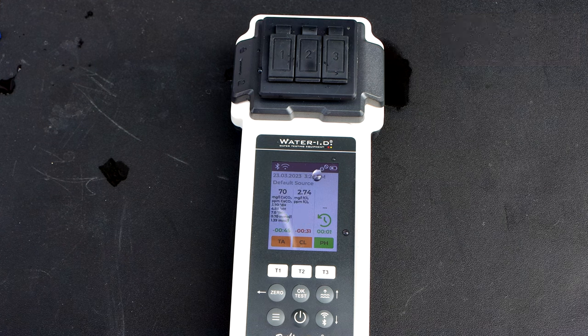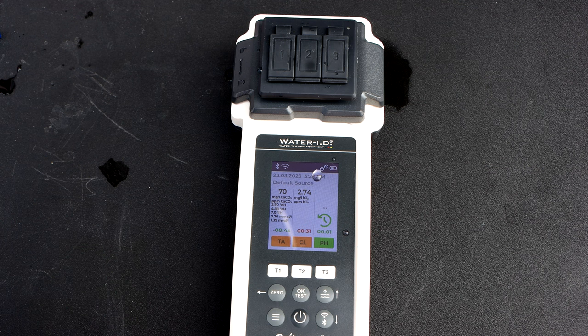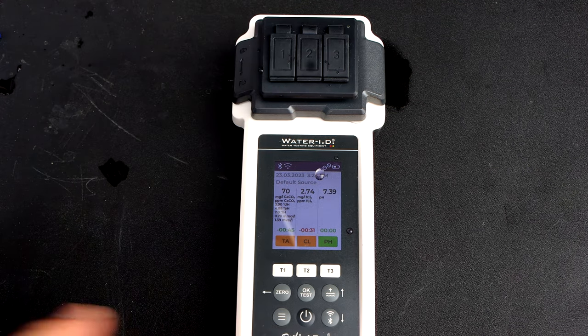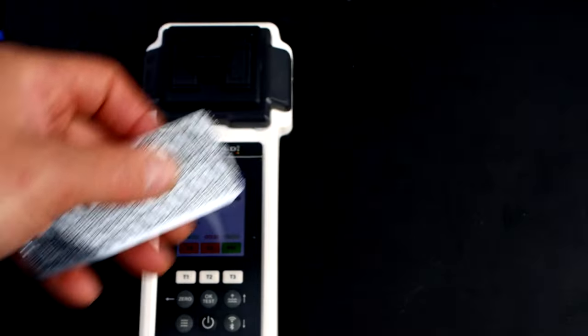The total alkalinity is 70, the chlorine is 2.7, and the pH is 7.39 or 7.4. So I'll do a total chlorine while I have the chlorine sample in the chamber. You want to use the DPD3.